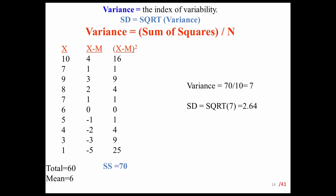This slide shows how standard deviation and variance are actually calculated. These are the scores of the students, and this is the mean, which is 6. To calculate variance and standard deviation, first calculate the distance of each score from the mean. For example, 10 minus 6 is 4, 7 minus 6 is 1, 9 minus 6 is 3. Next, you square each distance: 4 squared is 16, 1 squared is 1, 3 squared is 9. Then calculate the total of these squared values, called the sum of squares. Divide the sum of squares by the number of participants to get the variance, and take the square root of the variance to get the standard deviation.